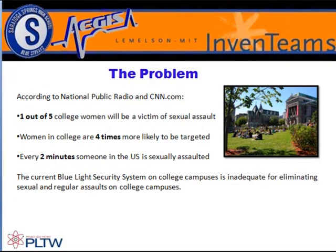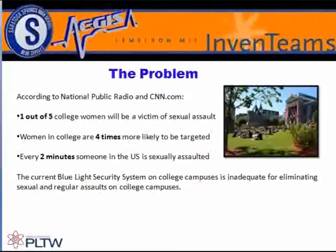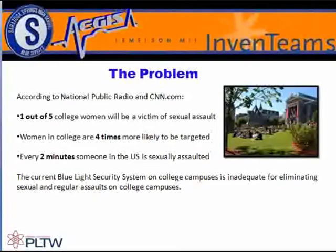The problem that Aegis is trying to address is the alarming amount of assaults, specifically sexual assaults, on college campuses each year. Nationwide, a recorded 3,070 assaults occurred on college campuses in 2003, and another 2,581 students were victims of sexual assaults. These statistics don't even include assaults that go unreported, and since these dates, colleges have made no changes in the outdated security system that they use on their campuses.